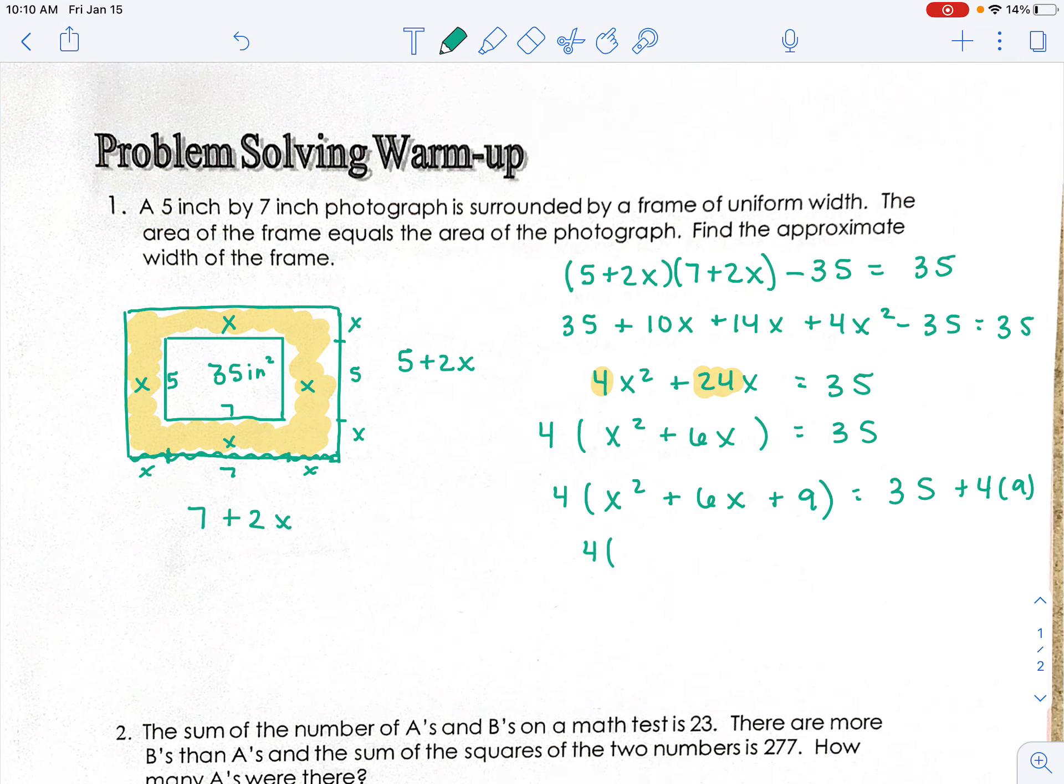Over here I have to add the 4 times 9. So I've got 4(x + 3)² = 71. Divide both sides by 4.